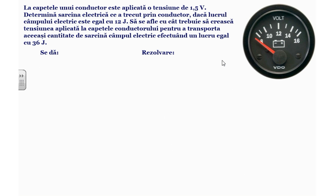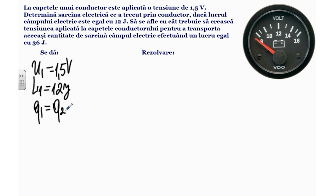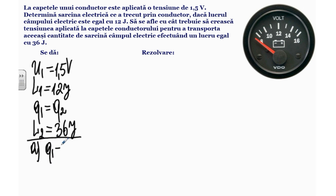Următoarea problemă: la capetele unui conductor este aplicată o tensiune de 1,35 volt. Determină sarcina electrică ce a trecut prin conductor, dacă lucrul câmpului electric este egal cu 12 joule. Să se afle cu cât trebuie să crească tensiunea aplicată la capetele conductorului, pentru a transporta aceeași cantitate de sarcină, câmpul electric efectuând un lucru egal cu 36 joule. Datele problemei: U1 egal cu 1,35 volt, L1 egal cu 12 joule, L2 egal cu 36 joule.